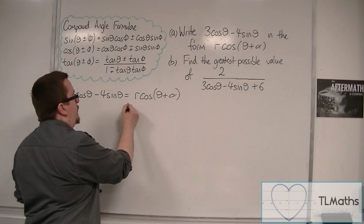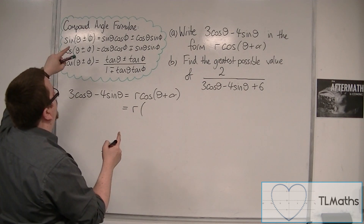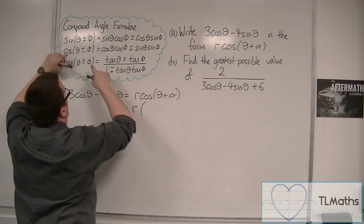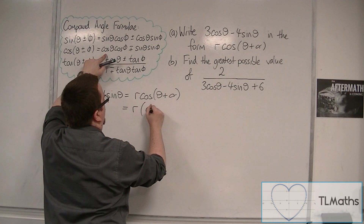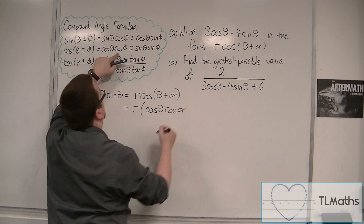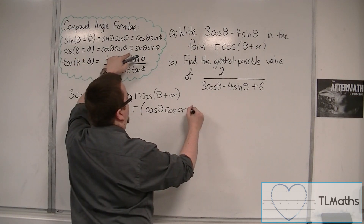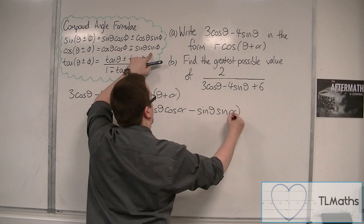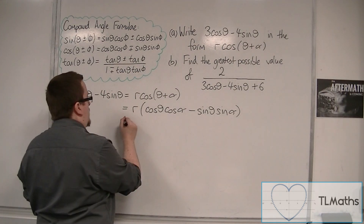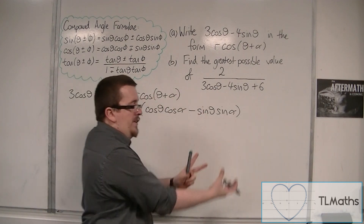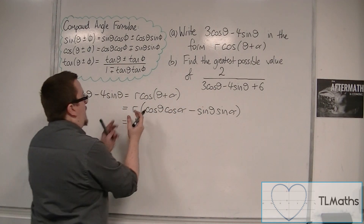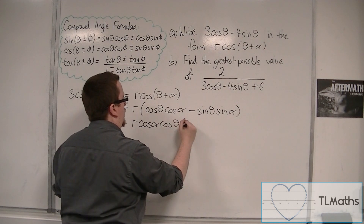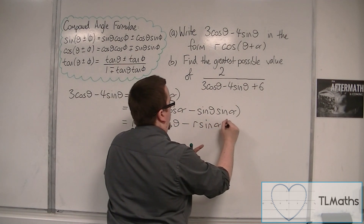From here I go straight to the compound angle formula and look for cosine. So cos(θ + α) equals cosθ·cosα — and if that's plus, this is minus — so minus sinθ·sinα. I'm now going to multiply through by r and make cosθ and sinθ the last terms: r·cosα·cosθ minus r·sinα·sinθ.